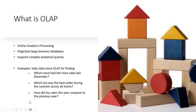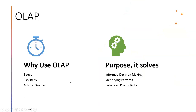Let's try to understand why we use OLAP and what purpose it solves, because we know what it is now. The very first thing: OLAP databases are optimized for querying, making retrieval of complex data faster. You can have insights in a very small amount of time, very quickly. As I said at the very beginning — complex queries, complex data analysis — you can do it easily with the help of OLAP solutions.